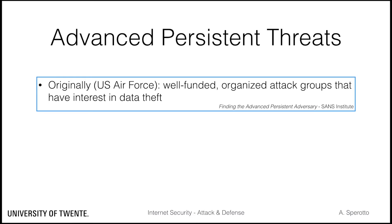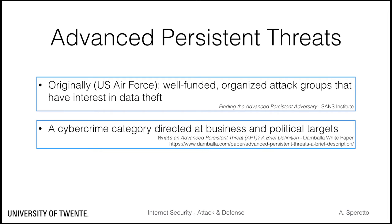Data theft includes, among others, theft of intelligence data, intellectual property, and personal information. A better terminology in this case would be Advanced Persisting Adversary. The term has over the years shifted focus and is now defined as a cybercrime category that is specifically directed at business and political targets.